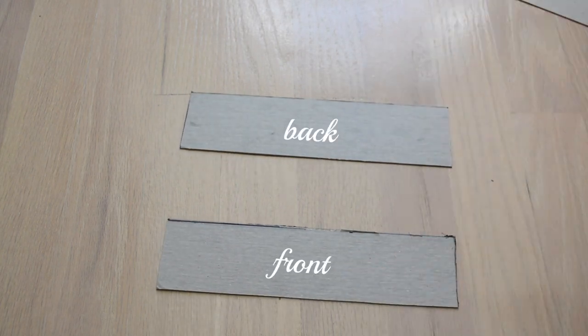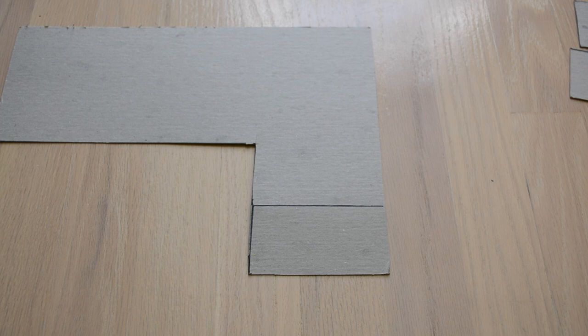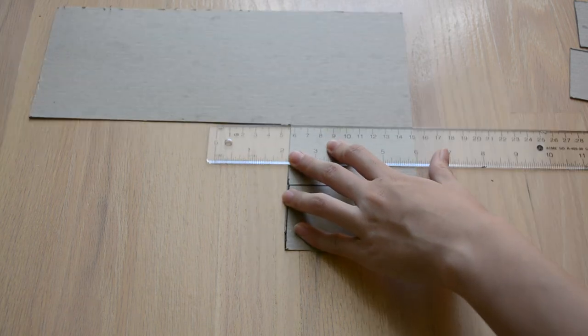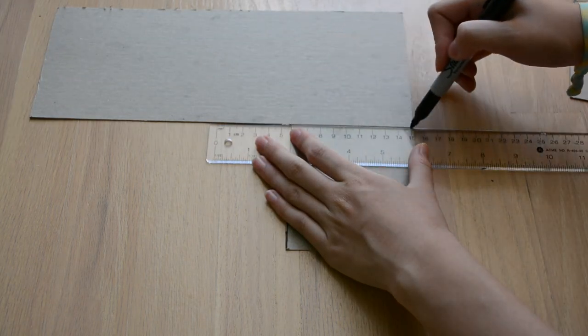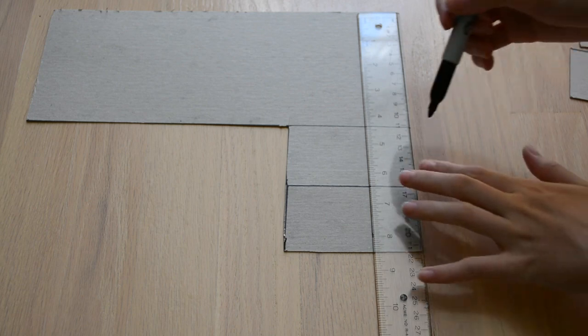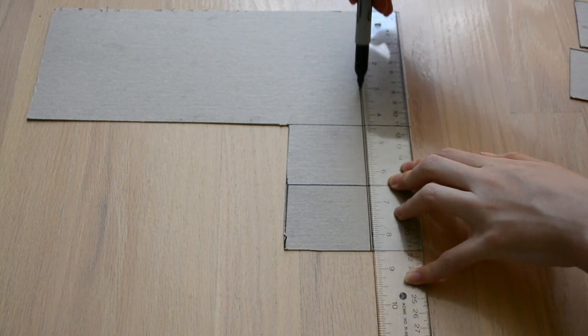Once you're done cutting out these rectangles, you now have the back and the front of your little shelf. Now it's time to make the sides. To make it easier, I'm just using the leftover cardboard from when I cut out the back and the front, so that I already have the measurements of how tall I need it to be.